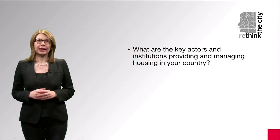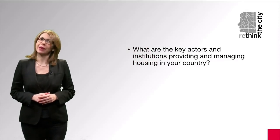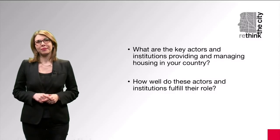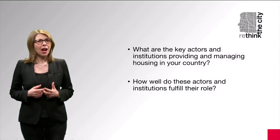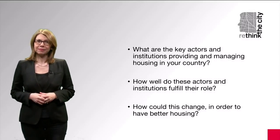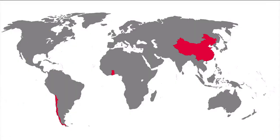So, what are the key actors and institutions providing and managing housing in your country? How well do these actors and institutions fulfill their role? How could this change in order to have better housing? In the next videos, you will see examples from three very different regions in the Global South — namely Chile, Ghana and China — where innovative policies and practices are being tried to tackle more effectively both long-standing and new housing challenges.